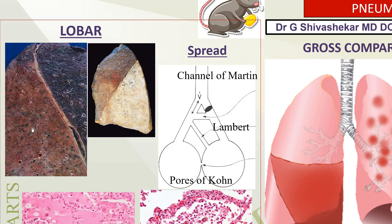Look at this lung specimen. The lower lobe is solid and liver-like in consistency, hence the name Hepatization. It is red in color — hence it is called Red Hepatization. Subsequently it becomes whitish-pink or gray in color, called Grey Hepatization. The entire lobe is involved and the lesion is restricted to one lobe. It is called Hepatization because it becomes liver-like in consistency and appearance.